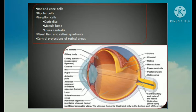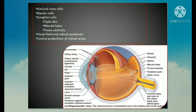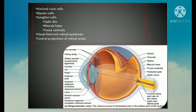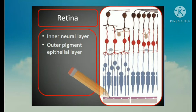The macula is a yellowish, oval-shaped area of about 6 mm in diameter, nearer the center of the posterior part of the retina. There is a small depression in the center of the macula lutea called the fovea centralis. The fovea is about 1.5 mm in diameter and is separated from the edge of the optic disc by a distance of 3 mm. Visual acuity is maximum at the fovea — the clearest vision occurs here. The fovea is believed to contain only cone receptors.